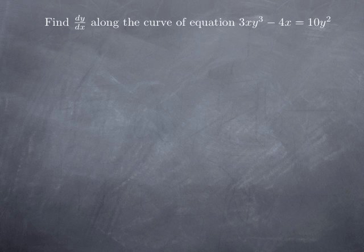The key to implicit differentiation is to differentiate both sides of the equation considering y as a function of x, even if y is not globally a function of x. So we start by differentiating both sides with respect to x, treating y as a function of x.